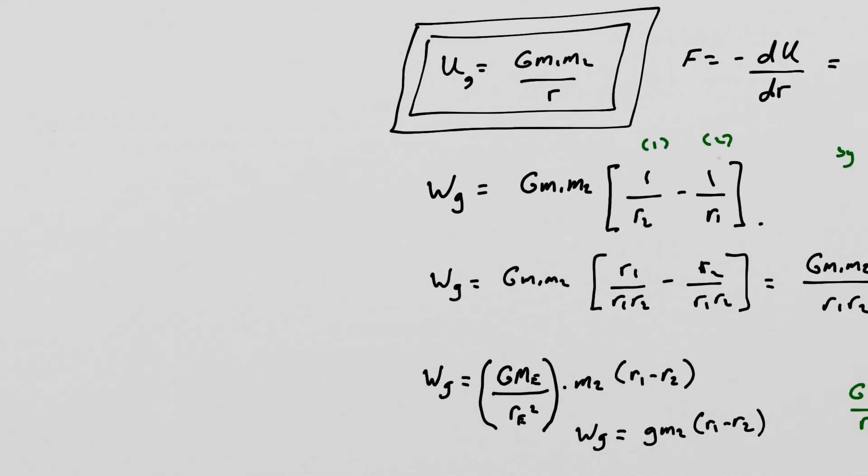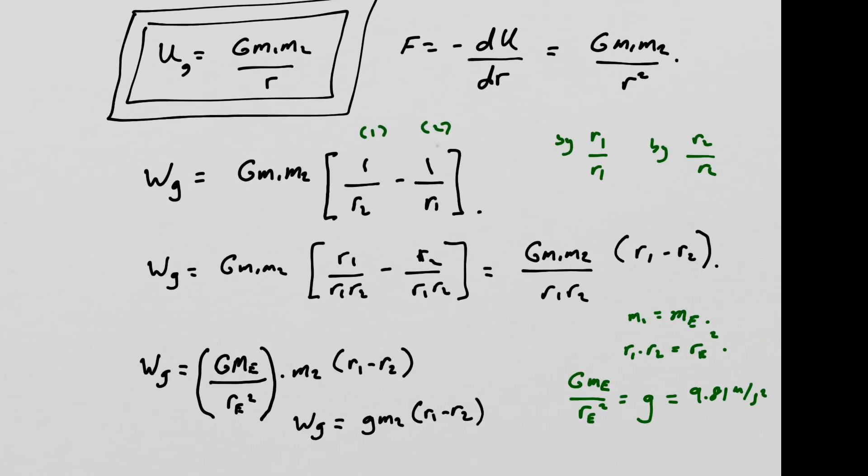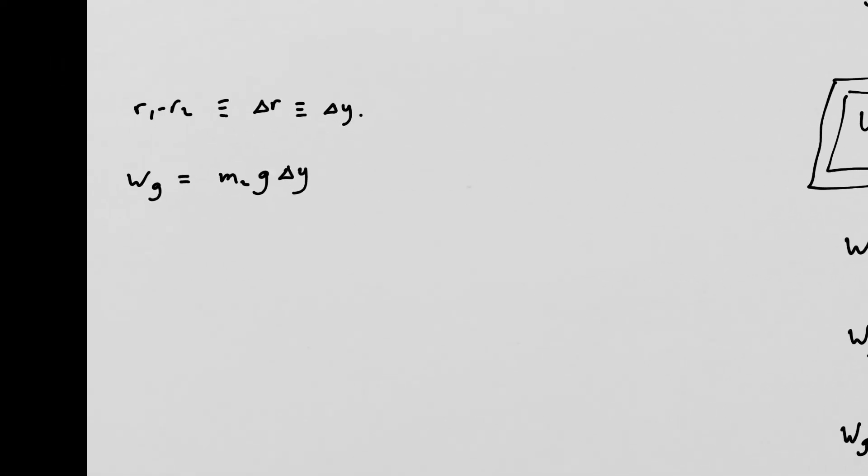Therefore, we have come to the conclusion that the work done by gravity close to the Earth is the mass of the object in question times g times delta y. And to be clear, we technically said that we were going from two to one or from point two to point one. So this is really a negative sign because we know that r1 minus r2 is the same as negative of r2 minus r1, which then is the same as a negative change in height. So if that's the case, and we apply the work energy theorem, then the work done by gravity is a negative change in potential energy. Therefore, the negative change in potential energy is negative m2g delta y. And we get back to our familiar mg delta y.